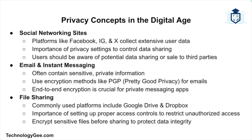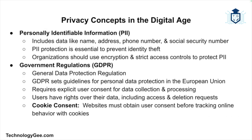Emails and instant messaging often contain sensitive information, so use encryption technologies like PGP (Pretty Good Privacy) for emails and end-to-end encryption for messaging apps to ensure communications remain private. For file sharing, services like Google Drive or Dropbox are widely used, but proper access controls are crucial — encrypt sensitive files before sharing and ensure only authorized individuals can access them.